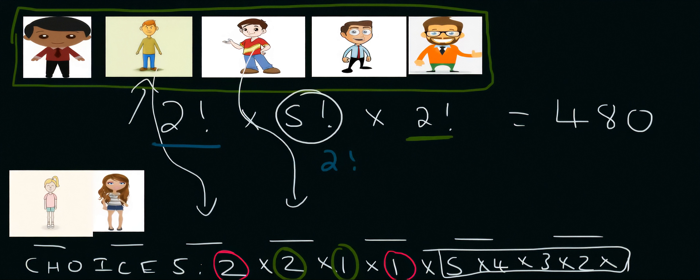The way you do it is you look at how many units you have in total, which we had two units. Then you look at the number of people within each unit. So in the girls unit there were two people, and within the boys unit there were five people, and that's all that you need to do.